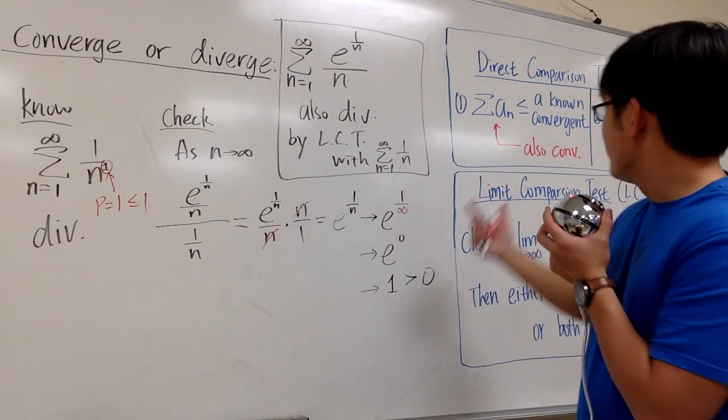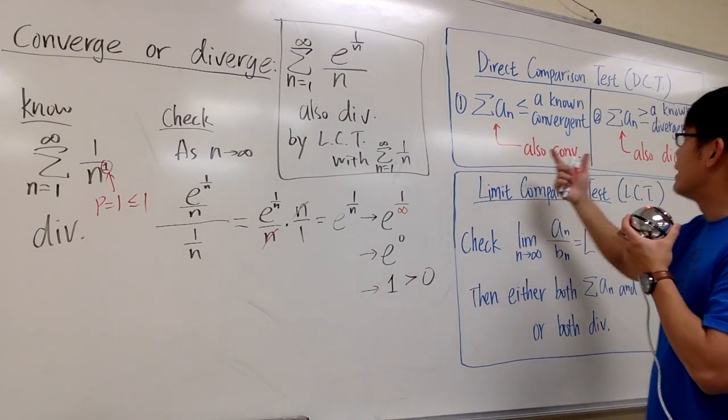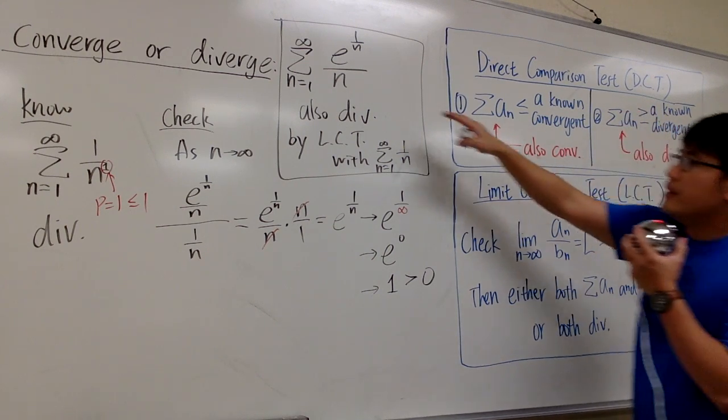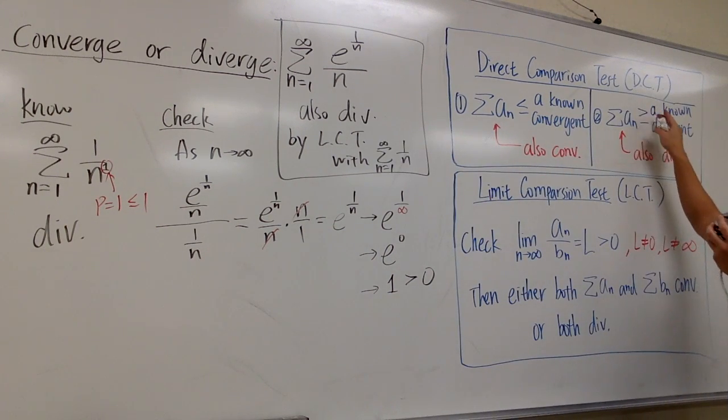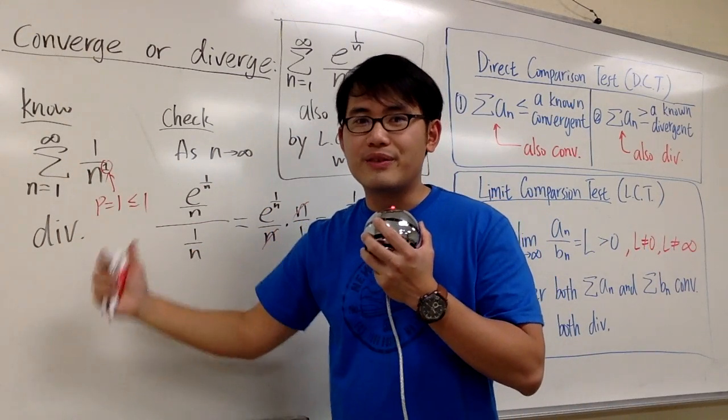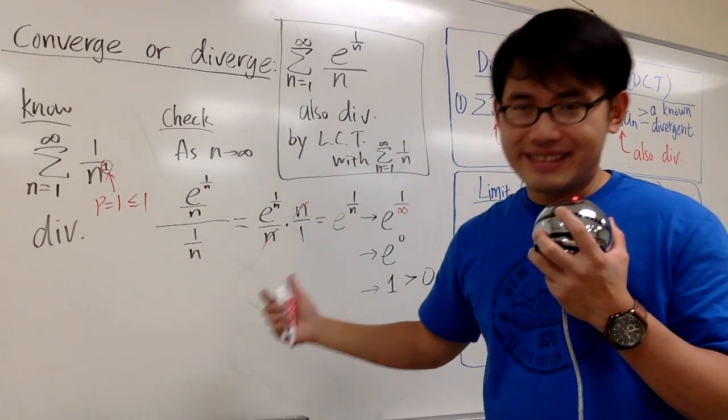If you want to use the direct comparison test, you just have to set up an inequality and check if it's greater than or equal to something we know diverges. I'll leave that to you.